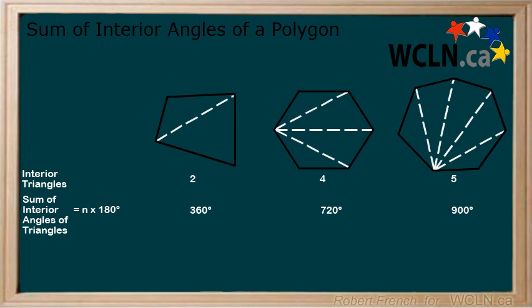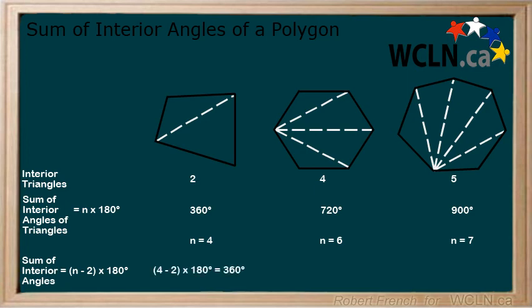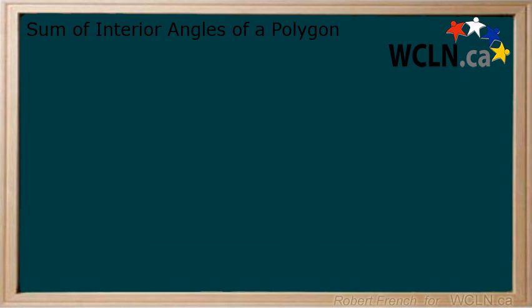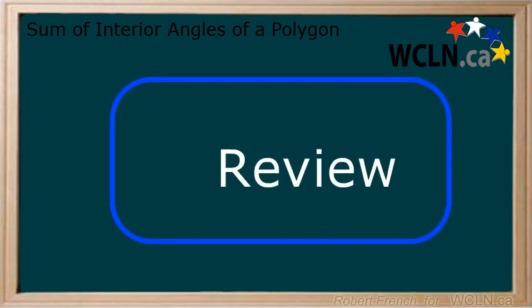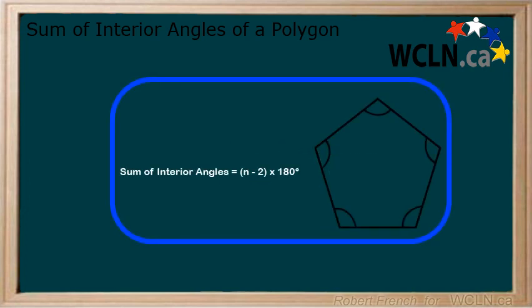Next, count the number of sides. Now use the formula for calculating the sum of the interior angles of a polygon based on the number of sides. The answers are 360 degrees, 720 degrees, and 900 degrees. In this lesson, you learned the formula for the sum of the interior angles of a polygon, and that n represents the number of sides.